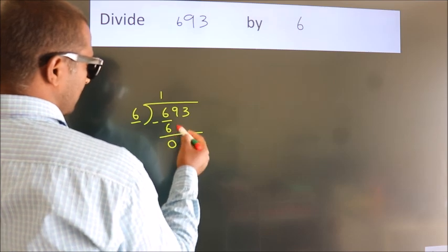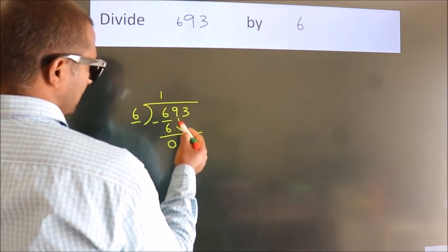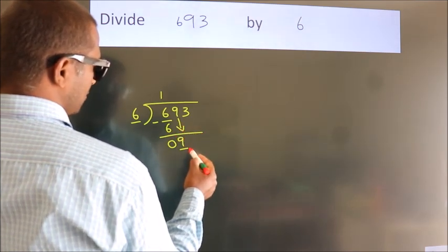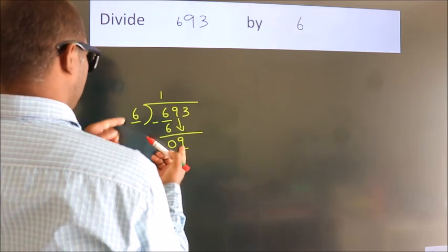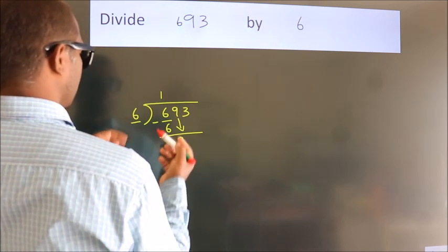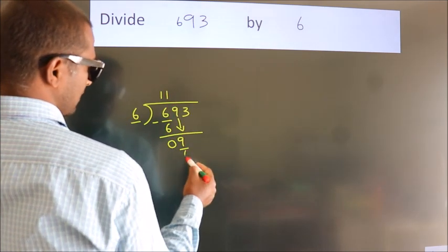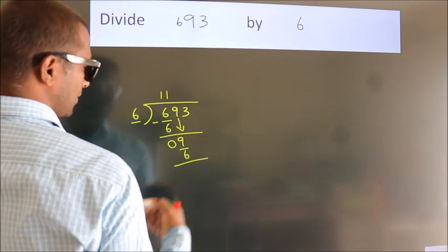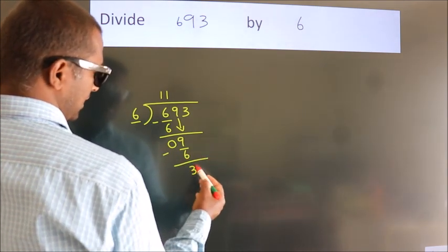After this, bring down the beside number. So 9 down, giving us 9. A number close to 9 in 6 table is 6 once, 6. Now we subtract. We get 3.